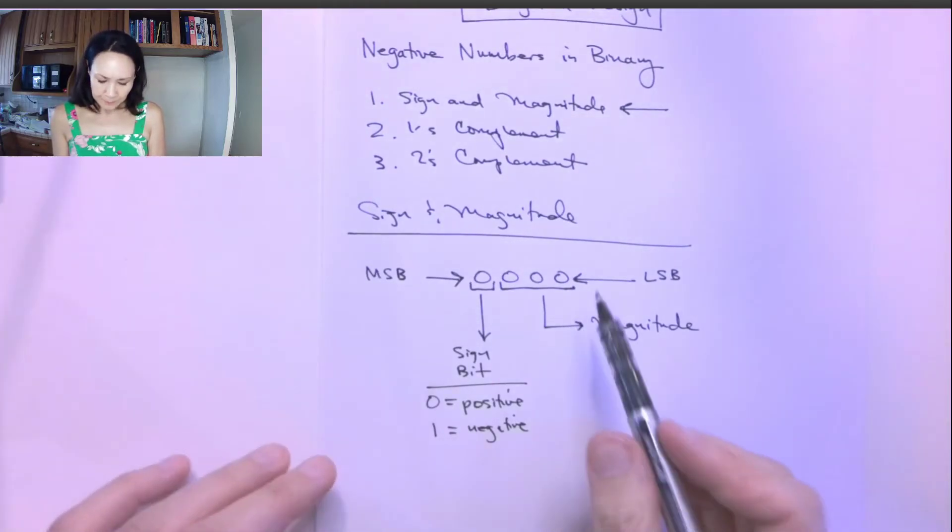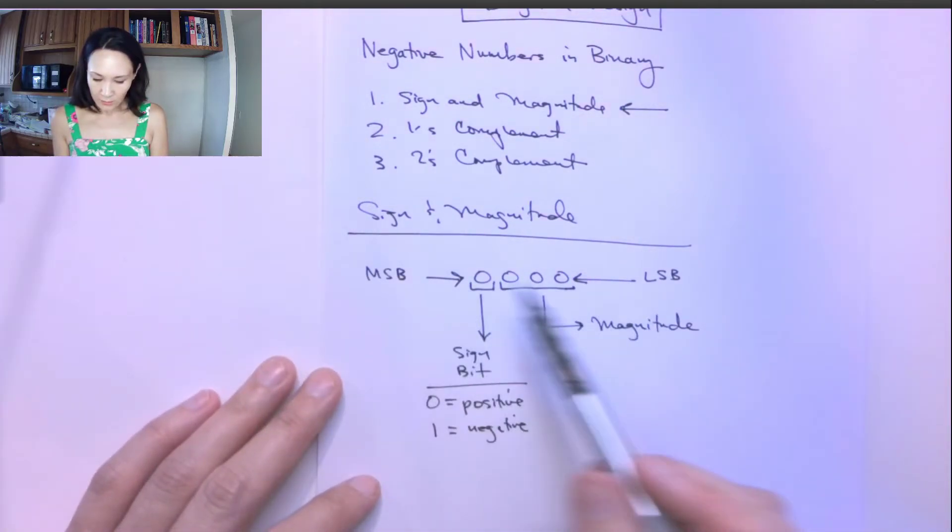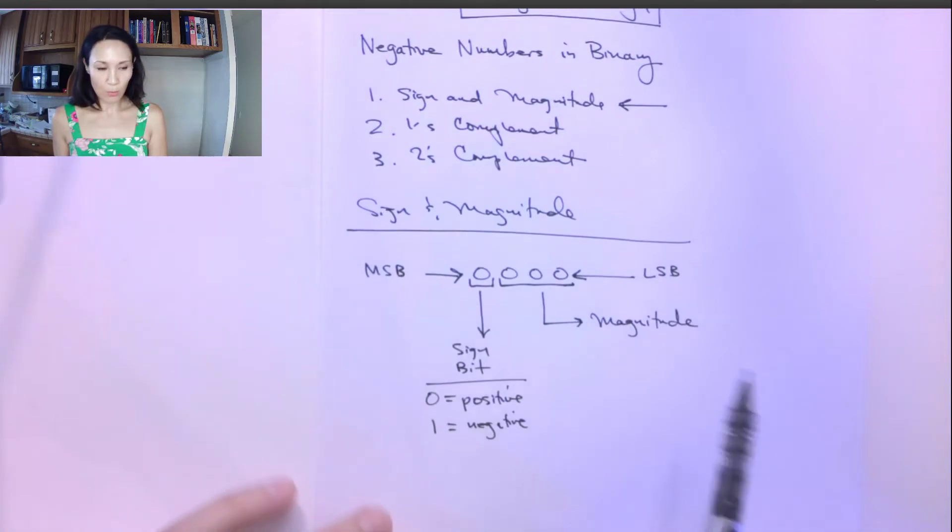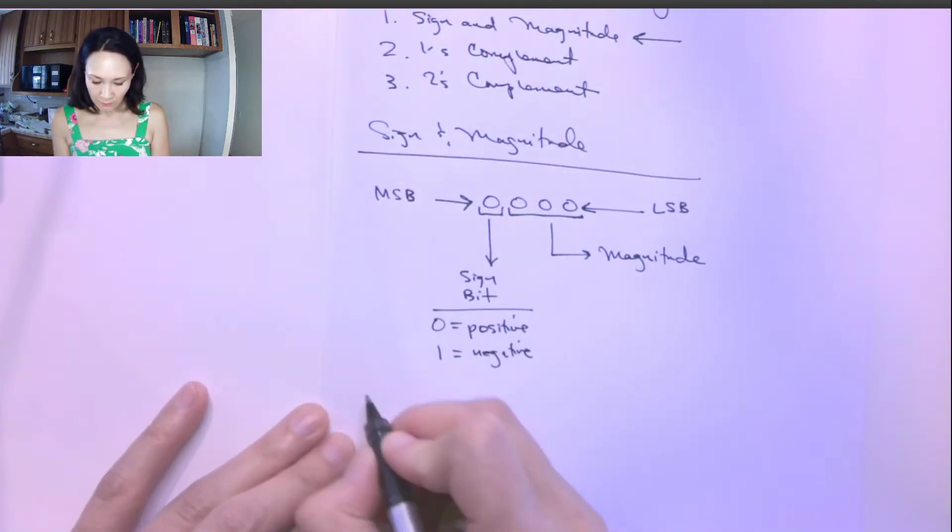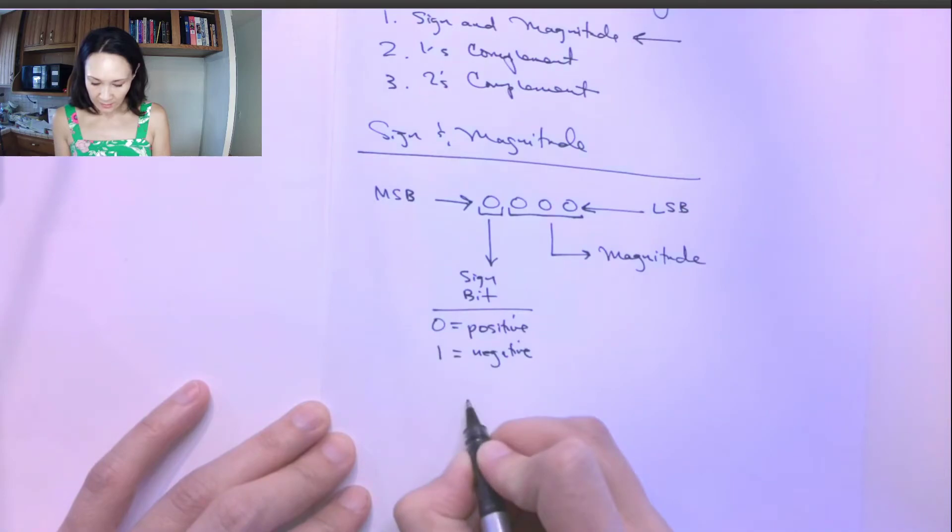Okay, so we can do this for any number of bits, but the important thing is we actually do have to specify how many bits we have. Because, suppose, for example, if we had a negative...